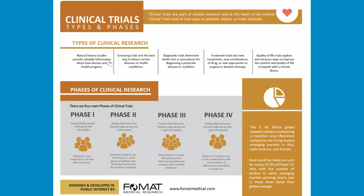If we think about clinical trials in five basic types, it's easier to understand. Natural history studies are really interesting and important because they provide information about how disease and health progress. The classic example is multiple sclerosis — there is a remitting-relapsing type where there are phases of remission and then relapsing. A similar pattern applies to cancers, where certain cancers peak at different age groups, and chronic diseases often have a long course of development.